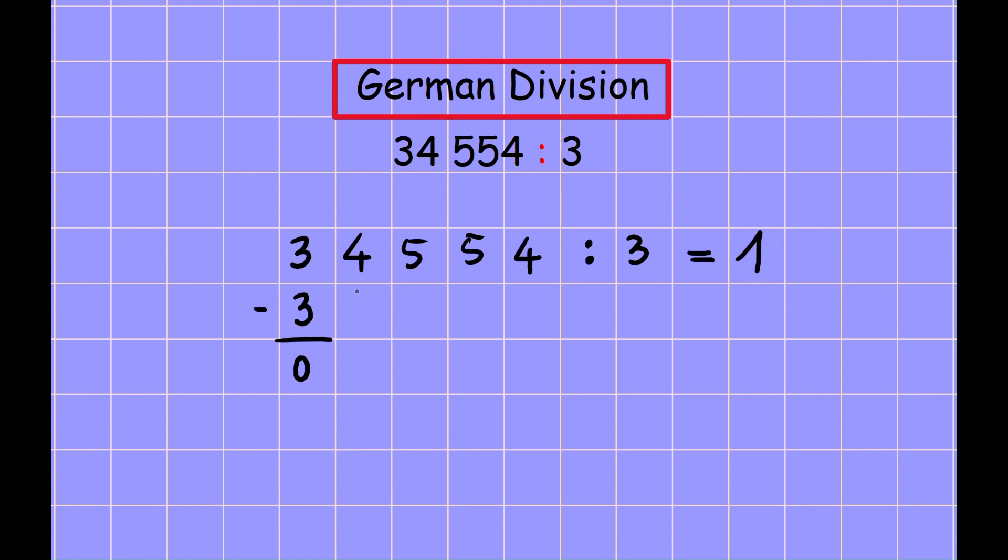And we write the four here. Now again, three times one to get four is one time, it's coming three times one is three, and the minus is coming like one. Now once again, we have to move five here.